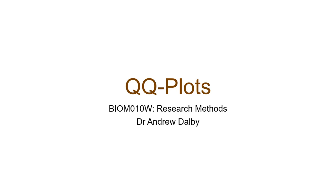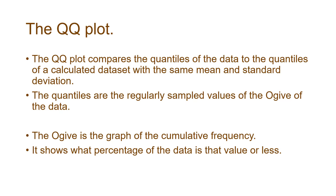QQ plots are related to the ogive, which is the cumulative distribution function. The QQ plot compares the quantiles of the data to quantiles of a calculated dataset with the same mean and standard deviation as the set of data you've got, but following a normal distribution.